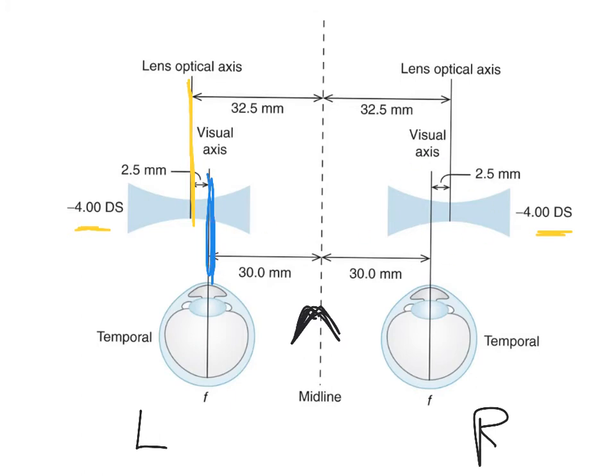Same thing with this eye here. Let me do it in blue again. So this is what the patient is looking through. This is the part of the lens that the patient is looking through. And then this is the lens optical axis.